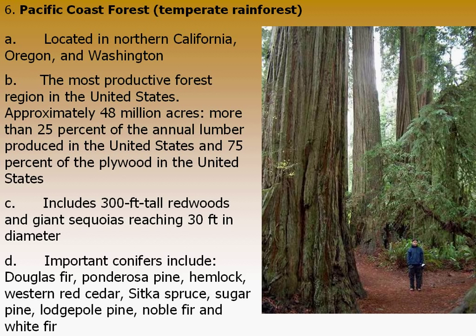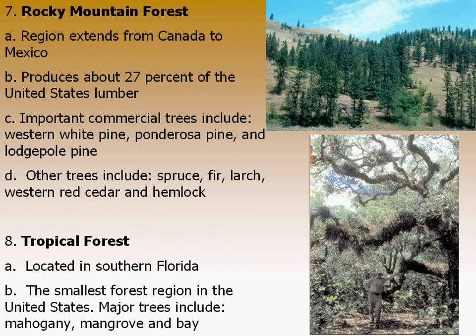Some other conifers in the Pacific Northwest include Douglas fir, Sitka spruce, and sugar pine, which are some of the larger pine species in the U.S. The Rocky Mountain forest extends from Canada all the way down to Mexico and is still a very high producer of lumber, primarily occupied by western white pine, ponderosa pine, and lodgepole pine, with some spruces and fir spread throughout as well.